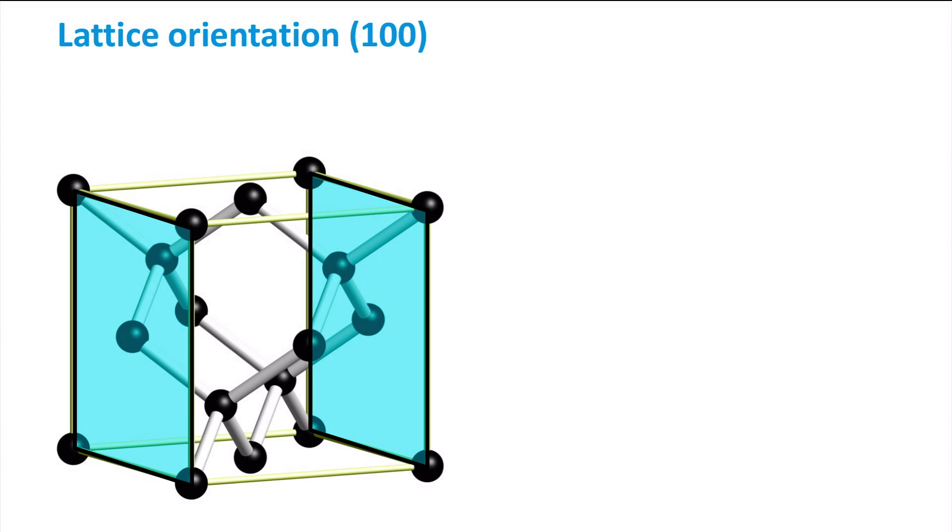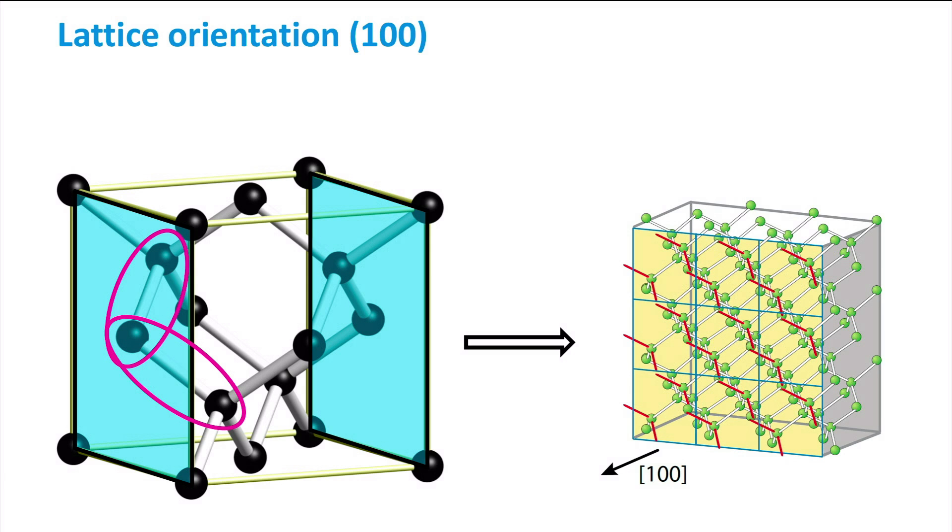When we first look at the 1-0-0 orientation, we see that each atom at the surface of the crystal is backbonded by two silicon atoms. As each silicon atom has four valence electrons, this means that this surface atom has two electrons that are not shared with another silicon atom. These are so-called dangling bonds, which are marked here in red.